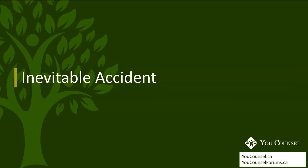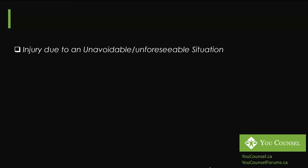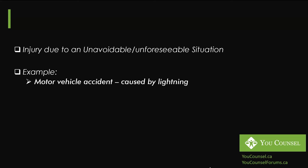The third defense is Inevitable Accident. Here, the defendant shows the court that the injury was due to an unavoidable or unforeseeable situation — something the defendant could not do anything about. Even with prudence and due care, the defendant could not have avoided the accident. For example, if someone driving on the 401 has their vehicle struck by lightning, loses control, changes lanes, and hits another car, and the defendant can show the loss of control was solely due to the lightning strike and nothing else could have been done to prevent it, this defense succeeds and the defendant would not be liable.